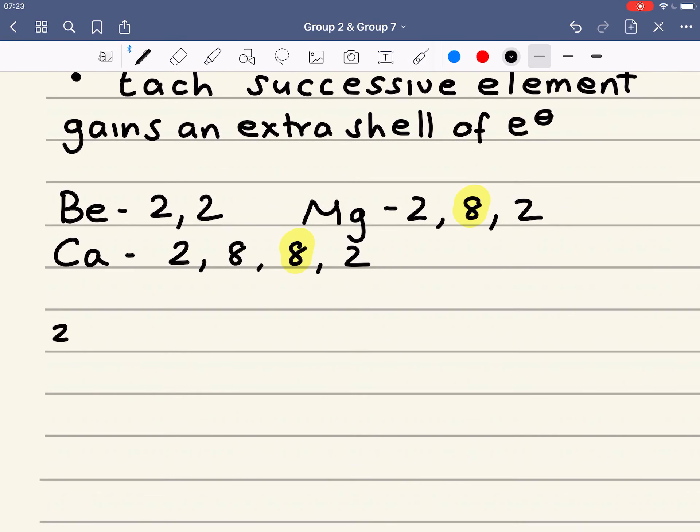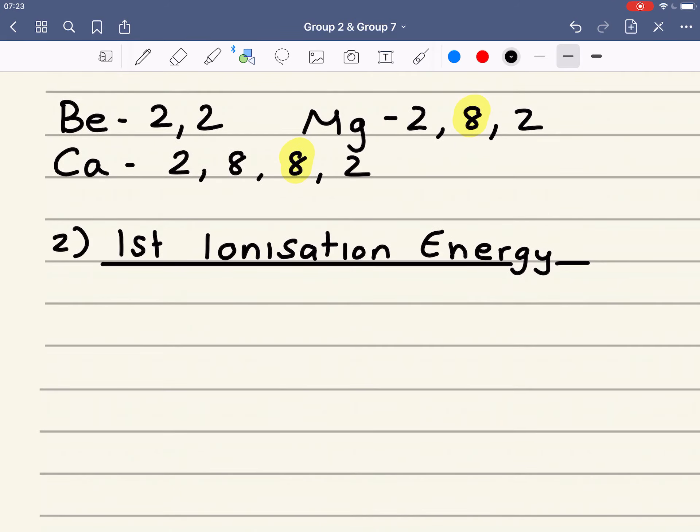The second trend we're going to have a look at is first ionization energy. And we need to be aware of what the definition of first ionization energy is. First ionization energy is the energy required to remove a mole of electrons from a mole of gaseous atoms. And I'm hoping you can remember that that will decrease down the group.